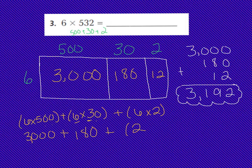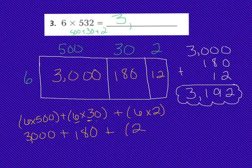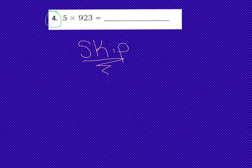I did the addition here for you: 3,000 plus 180 plus 12. Those partial products added up give me my final product of 3,192. Boys and girls, I want you to make sure that you have the work done for this problem underneath number 3. We're going to skip number 4, so I would like you to circle number 4 and write the word skip underneath it.